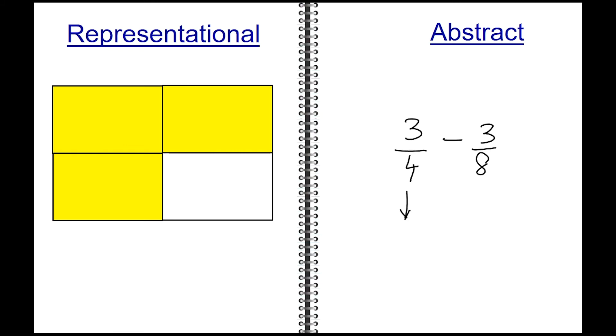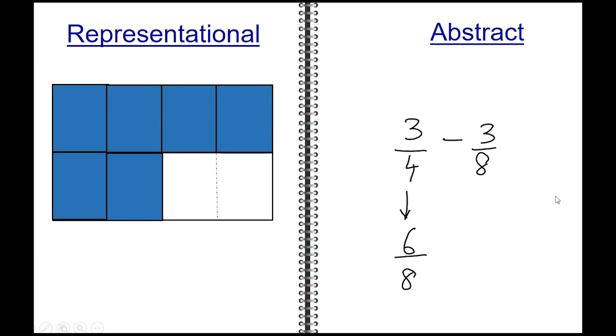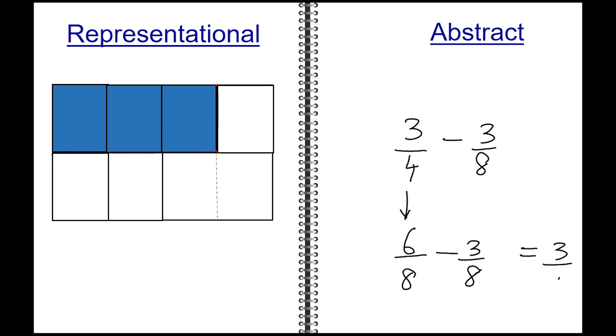Converting the 3 fourths into eighths by finding an equivalent fraction gives me 6 eighths. Once I have the 6 eighths, now I can remove the 3 eighths. As you can see, 6 eighths minus 3 eighths gives you 3 eighths for an answer.